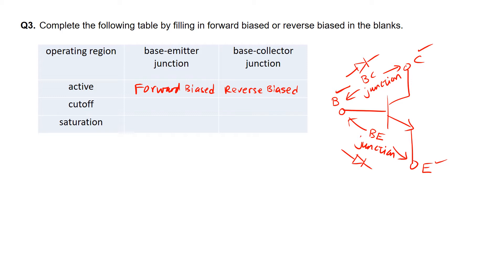In the cut-off region, the BE as well as the BC junction are both reverse biased. For the saturation region, this is actually the opposite of cut-off region, whereby the base-emitter junction and the base-collector junction are both forward biased.